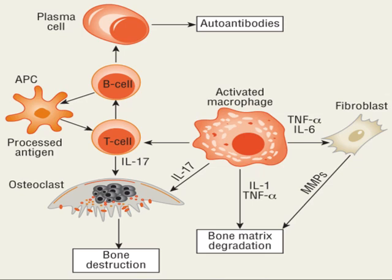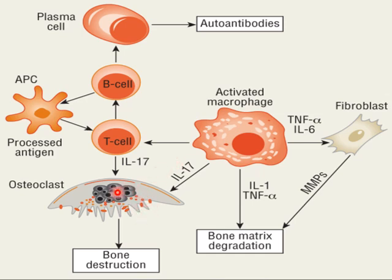Looking at this picture: plasma cells release autoantibodies, B cells activate antigen-presenting cells (APCs), which activate T cells, producing inflammatory cytokines like interleukins. Activated macrophages lead to destruction of the bone matrix. This is a self-perpetuating cycle leading to damage to the joint itself.